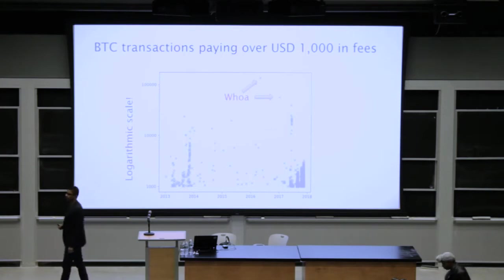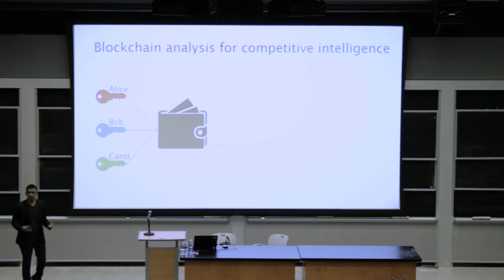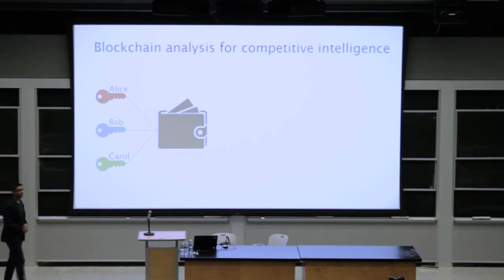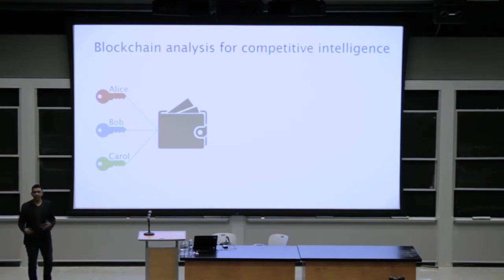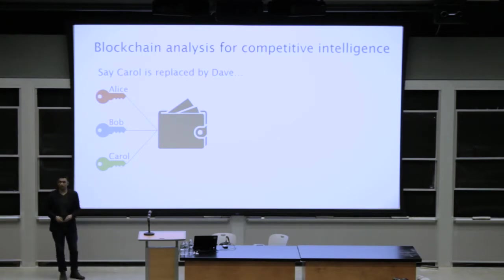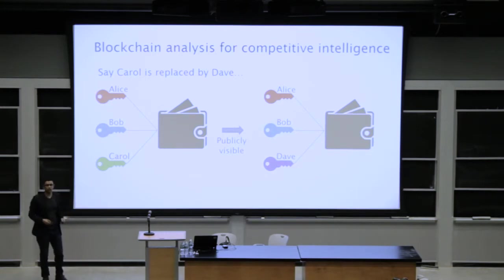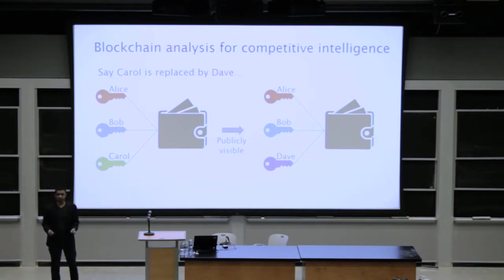Now let's get to something more serious. Imagine a typical situation at a company: you're worried about the security of your crypto assets, so you're using a multi-signature wallet, and control is distributed between three employees. Let's say Carol leaves the company and Dave is hired to replace her. The company would have to transfer all funds into a new wallet controlled by Alice, Bob, and Dave — a set of three private keys sharing two with the first wallet. This transaction is going to be publicly visible on the blockchain.